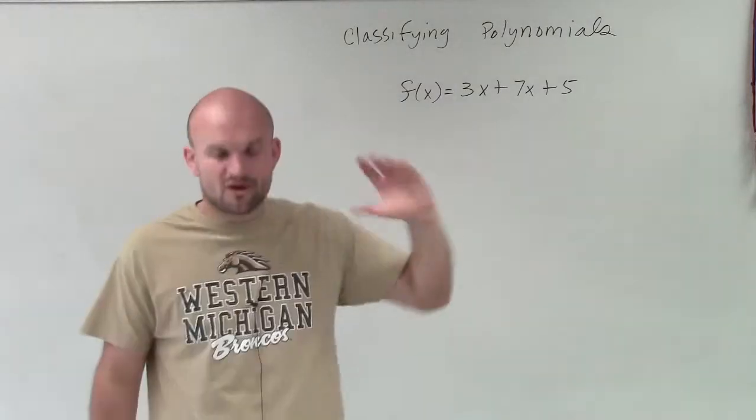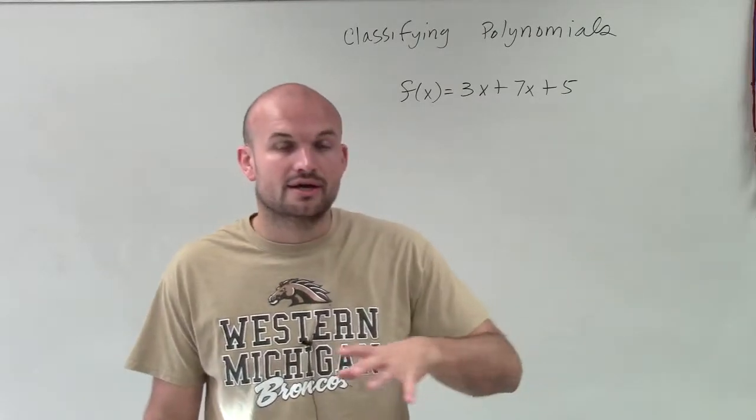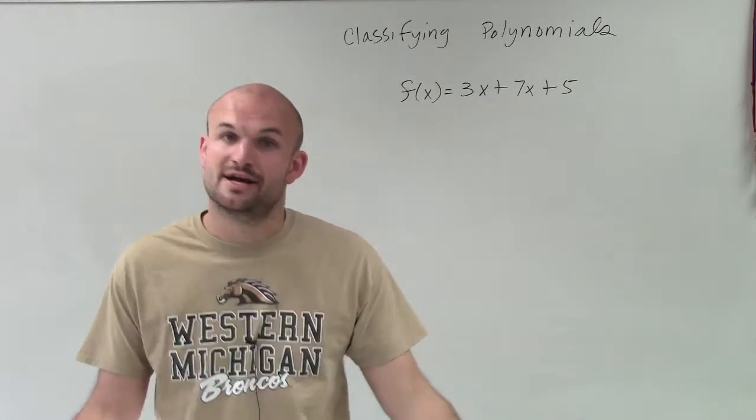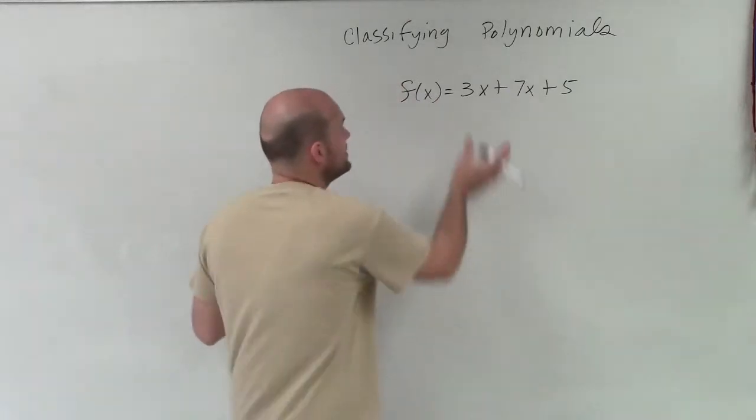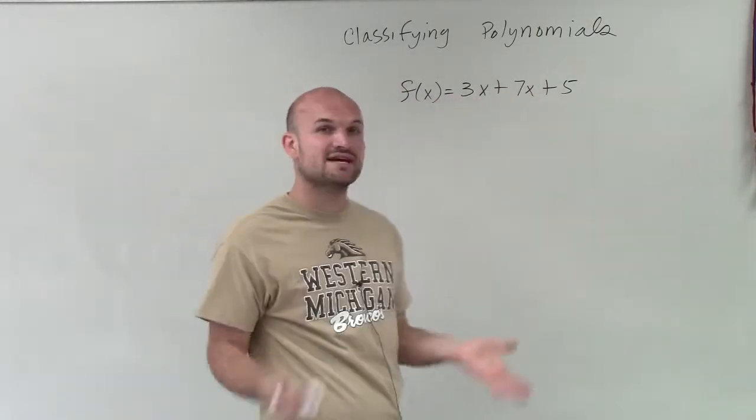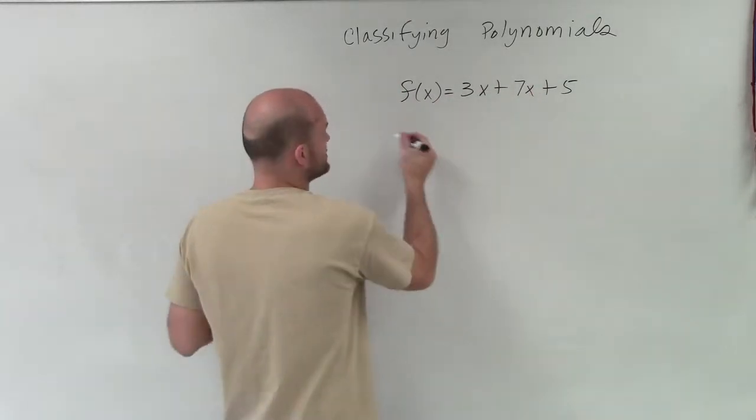So if I was going to simplify this, remember our first step, or to classify them, sorry. The first thing we always want to do is write it in standard form, I mean, in our descending order. Well, we noticed that 3x, 7x, they both have the same variable factors of x. So I can actually combine these.